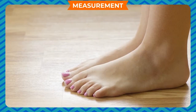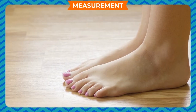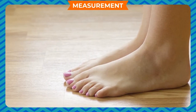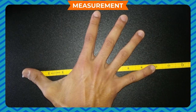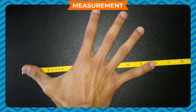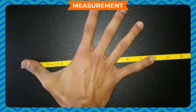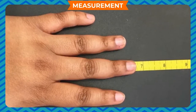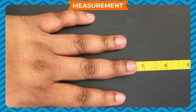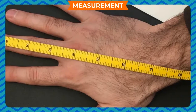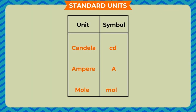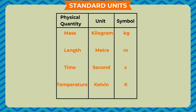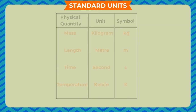Long time ago, people used foot, footstep, hand span, arm, or cubit to measure length. But these units of measurement are unreliable because they vary from person to person. There was a need for units of measurement which could be uniformly used by everyone. Such a unit is called a standard unit — a unit of measurement which is internationally accepted as a basic unit of measurement.